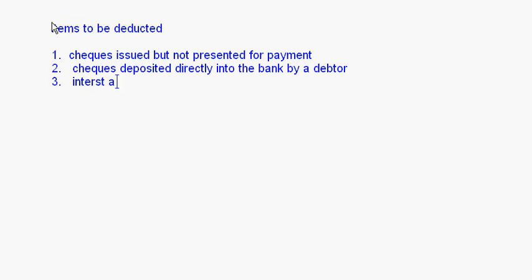Third deduction: interest allowed by the bank — the bank credits this amount, so it should be deducted. Fourth: dividend collected — when the bank collects the dividend it credits that amount, but the cash book won't reflect it until we receive the intimation. So the overdraft balance as per the passbook decreases, and this should be deducted.